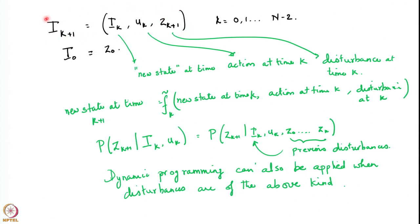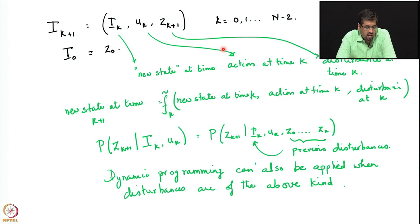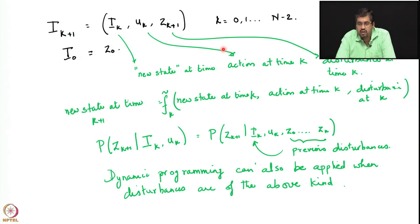We thought of this recursive relation as our new state equation, with the information at time k as the new state. The action remained the same and was chosen as a function of the information at time k. By redefining the state variable, the problem reduces to one of perfect state information.